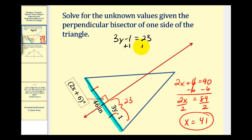So we add 1 to both sides. We'll have 3y, that's 0, equals 24. Divide both sides by 3. Well, 24 divided by 3 equals 8. So we have y equals 8.